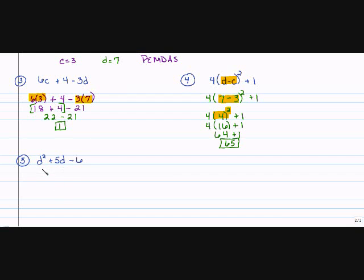On to the next one. D squared plus 5 times D minus 6. Notice there's no operation here. There's no parentheses. They're just kind of squished together. So I assume it's multiplication. So D squared, which is 7 squared plus 5 times 7 minus 6. According to PEMDAS, I don't have any parentheses to solve. So I move on to my exponents.